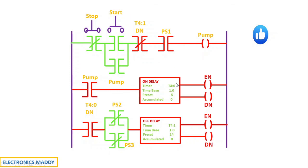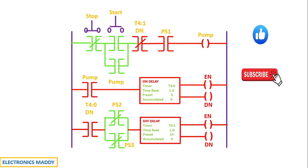So to summarize: PS1 turns on and the start button is pressed — the pump starts. After the pump starts, there is a 5-second delay, and only after that delay are PS2 and PS3 connected. After that, in case PS2 or PS3 opens, the done bit of the off-delay timer causes the system to wait for 14 seconds before any other process can take place — and that is exactly according to the requirement of the question. If you like this video, please like it, share it, and subscribe to our channel for regular updates. Thanks for watching!